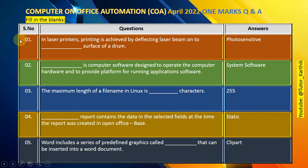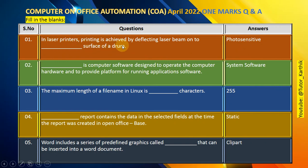Fill in the blanks. Question number 1: In laser printers, printing is achieved by deflecting a laser beam onto the photosensitive surface of a drum.